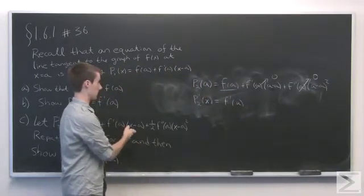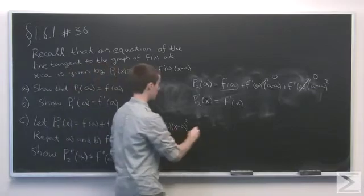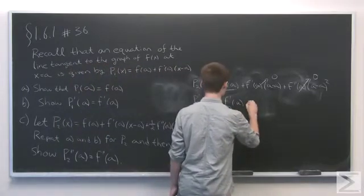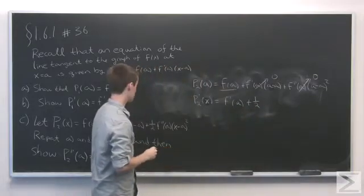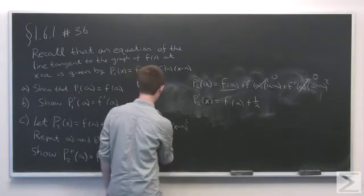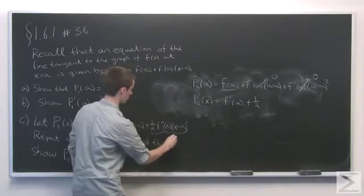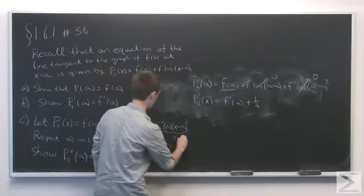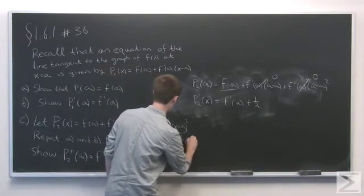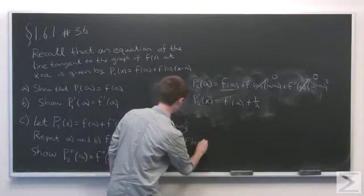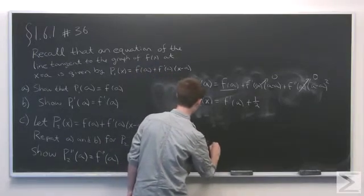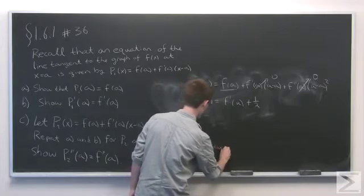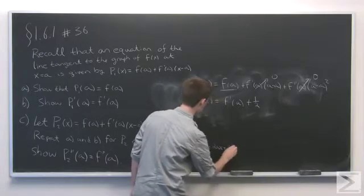And the second part will just be a constant, so that will go to zero. And we're going to add 1/2 times, well, this term here will be equal to (1/2)f''(a) times (x² - 2ax + a²).